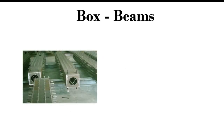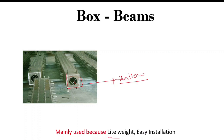The last type in this category is the box beam. The reason we call it a box beam is that the cross-section is hollow with a box shape. The major advantage is that it is lighter than solid beams and can be installed very easily.